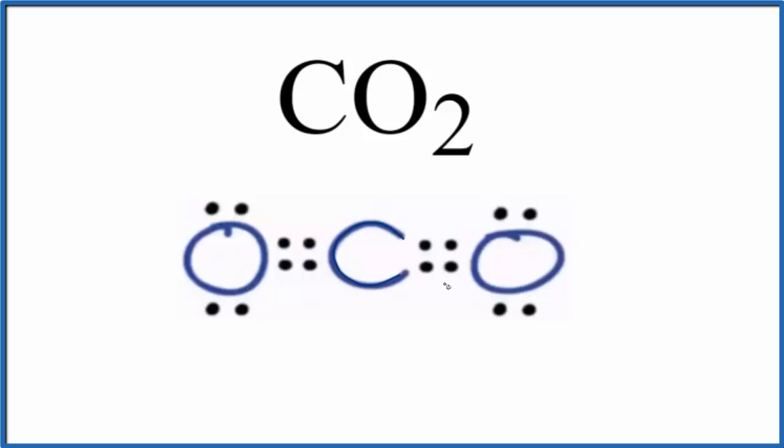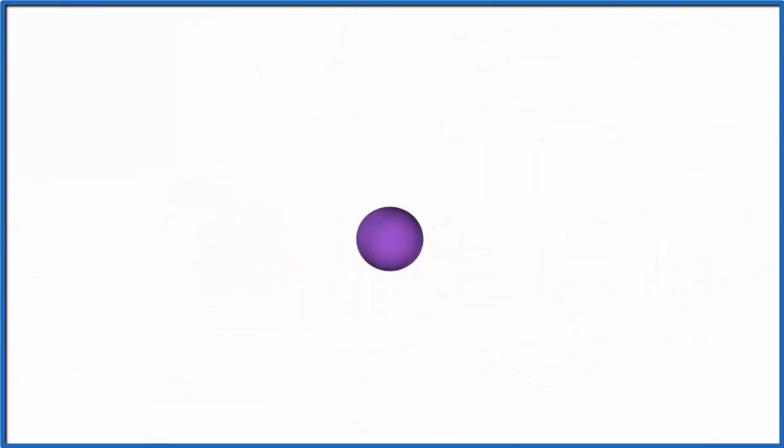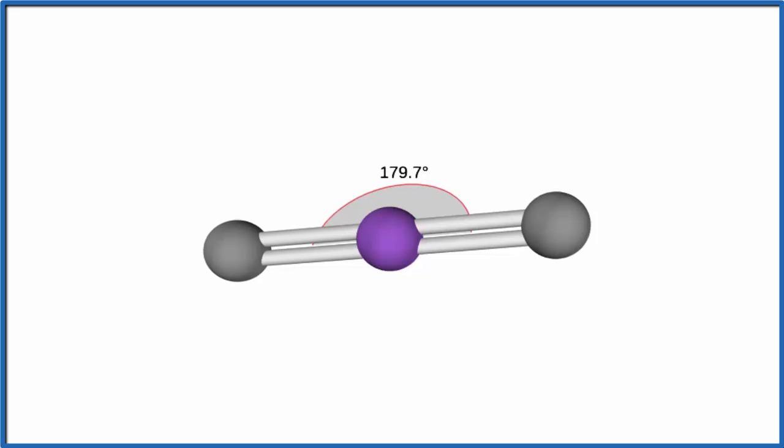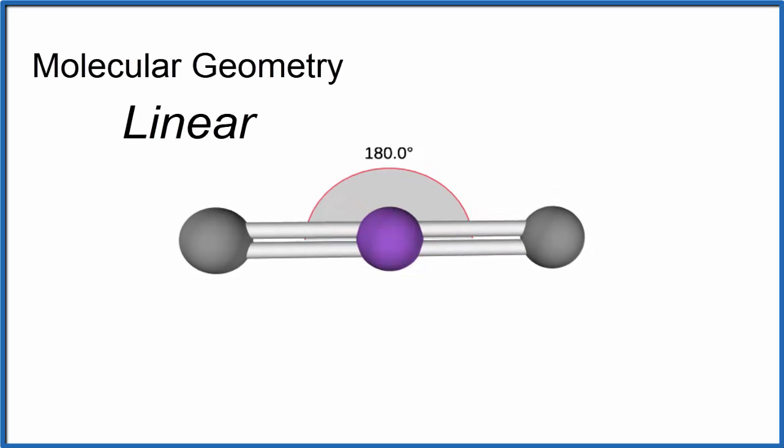Let's visualize that happening. So the purple, we'll say that's our carbon atom. We'll add two oxygen atoms. They're both double bonded. There's one, and then we add the other. They push away, spread out, and we end up with this molecular geometry of linear, bond angle 180 degrees.